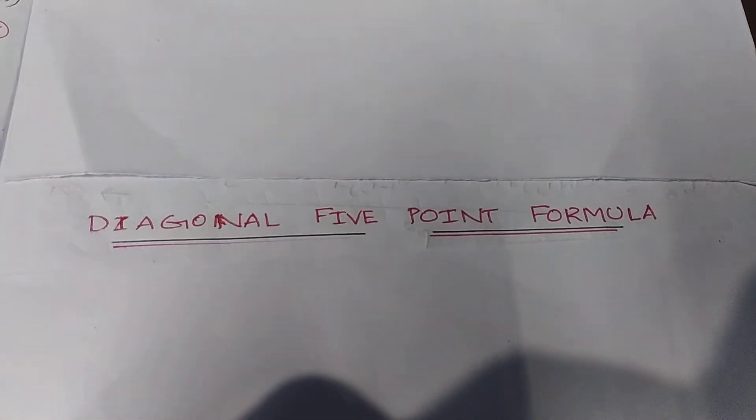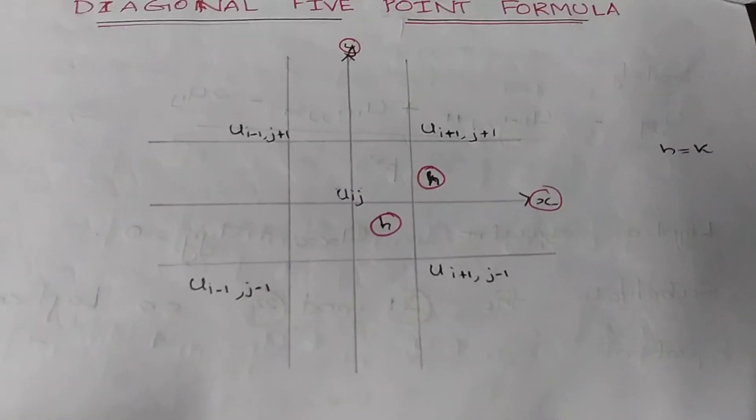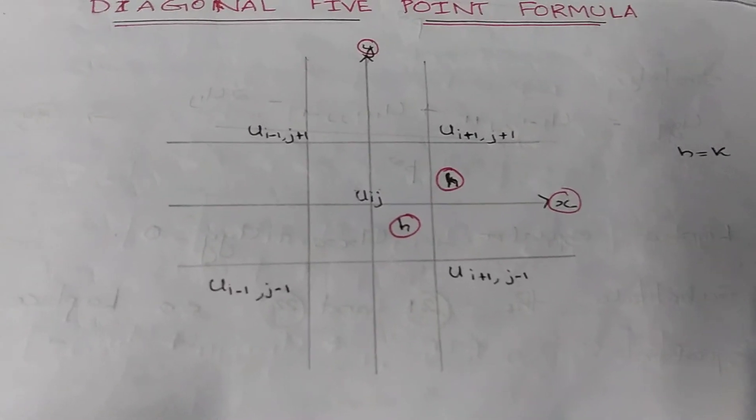Today we are discussing the diagonal five point formula. In the finite difference approximation method, the grid or mesh structure is given where h is the difference between two points in the x-direction, and k is the difference between adjacent points in the y-direction. To solve the diagonal five point formula, we take h equal to k and consider the diagonals of the x and y axes.